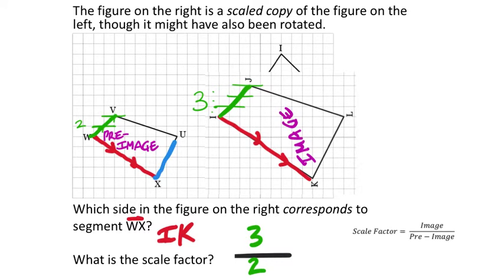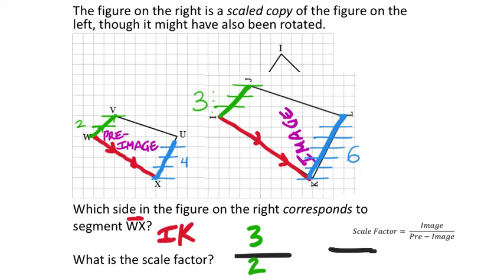I'll verify this by comparing UX with LK. From U to X, I count 4 grid lines — a pre-image length of 4. The corresponding image length LK is 6. So 6 over 4 simplifies to 3/2. These are proportional figures because the side lengths compared to each other are exactly the same simplified fraction. It would be the same whether you found the exact length or just counted lines, and whether you use JL with VU or WX with IK.